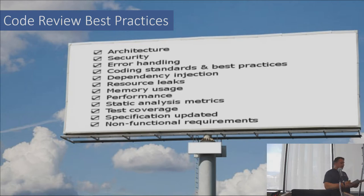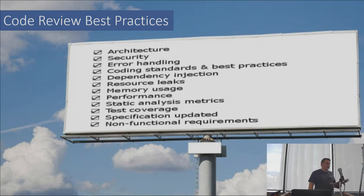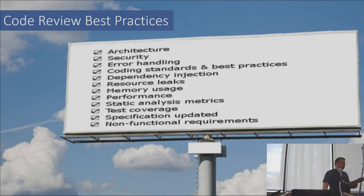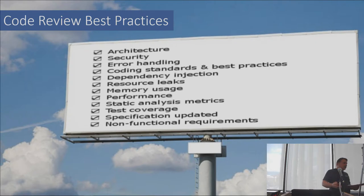Checklists for both authors and reviewers tend to increase the effectiveness of code reviews. Coding is complicated and there are a lot of things to remember. Having both author and reviewer ensure proper attention has been given to each area can make the process more efficient and effective. Since each developer is unique and developers tend to make the same 15 to 20 mistakes over and over, having a personal checklist to remind developers to double-check their own weaknesses and common mistakes can really pay off.